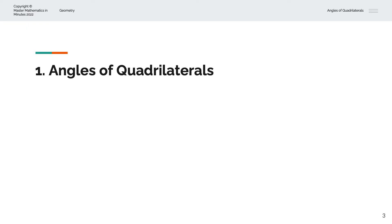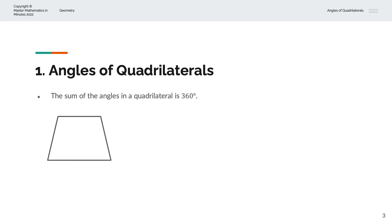So, what are angles of quadrilaterals? The sum of the angles in a quadrilateral is 360 degrees. We'll consider this visually. Firstly, by looking at a trapezium with angles A, B, C, D. We have the sum of these angles — A plus B plus C plus D — is equal to 360 degrees.